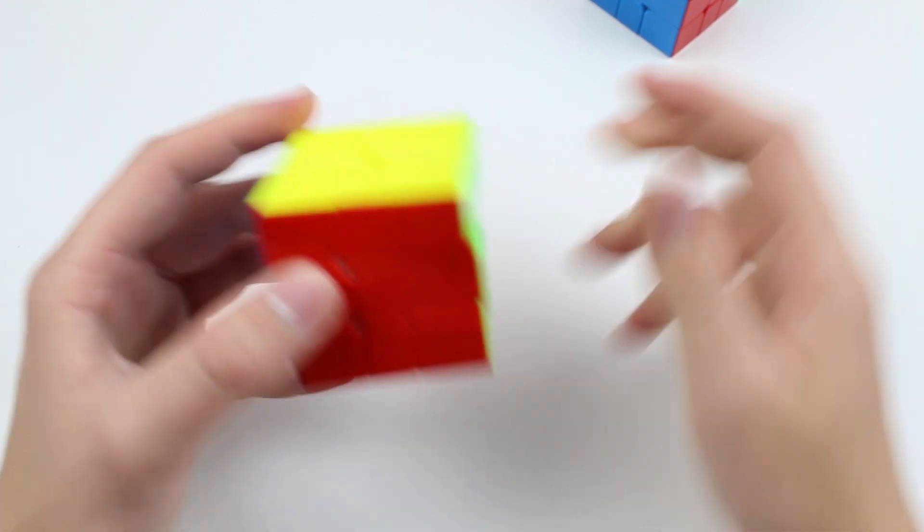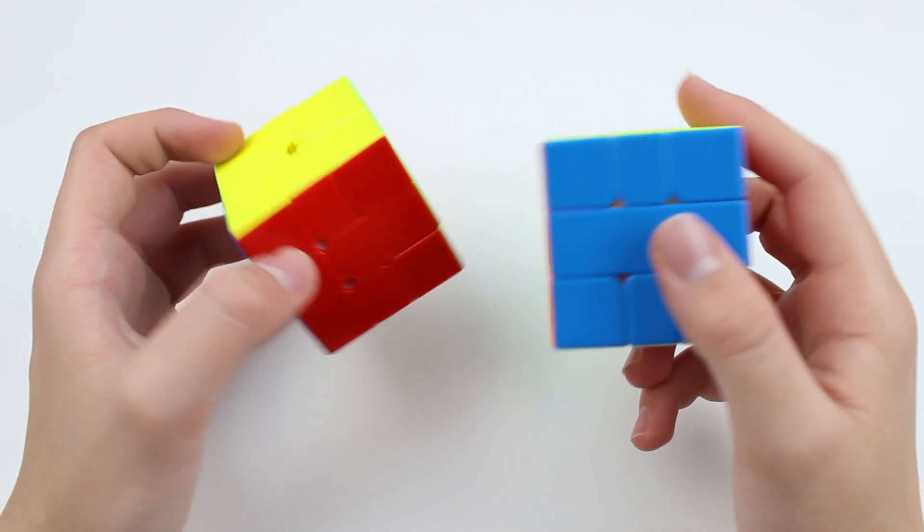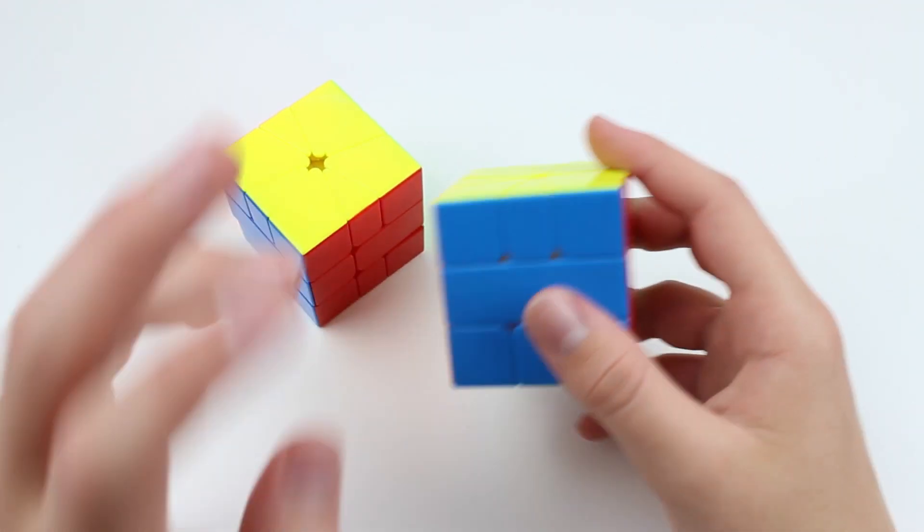I haven't had any problems with stripping on the Little Magic Square One M yet, but I'll have to see if that could happen over time.